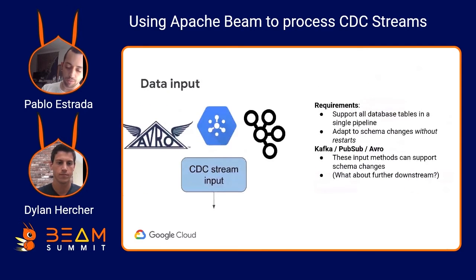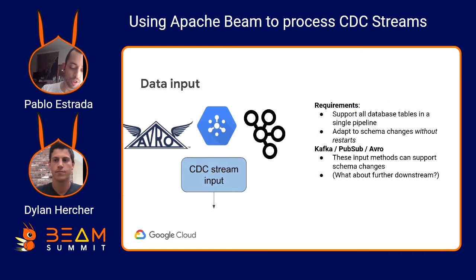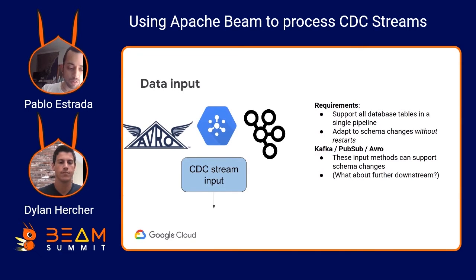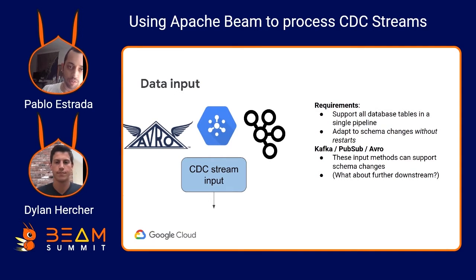Specifically for data input, we had certain requirements. We wanted to support all of the database tables — multiple tables of a database in a single pipeline. We also wanted this pipeline to adapt to changes to the schema in the source without asking our users to restart the pipeline so that schemas would be updated. Finally, we also wanted to support Kafka, Pub/Sub, and Avro.